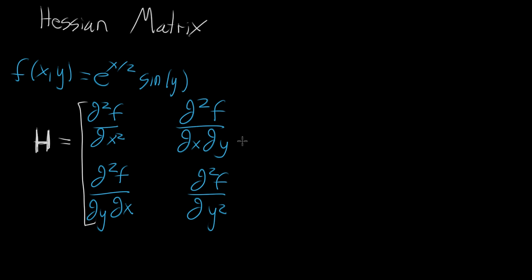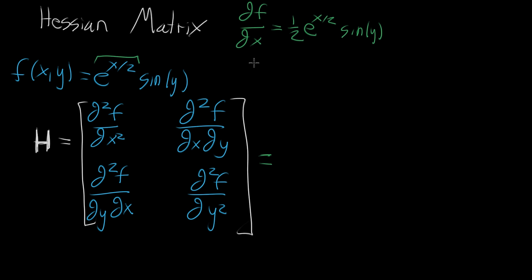Let's go ahead and actually compute this for our specific function. To get all the second partial derivatives, we first keep a record of the first partial derivatives. The partial derivative of f with respect to x: the only place x shows up is in e to the x halves, so bring down one half, giving one half e to the x halves times sine of y. The partial derivative with respect to y: e to the x halves looks like a constant, and the derivative of sine of y is cosine of y, so we get e to the x halves times cosine of y.